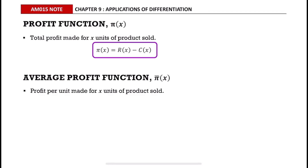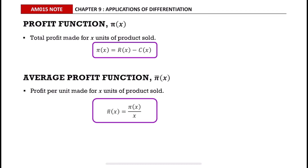The average profit function is denoted as π̄(x). It is the profit per unit made for x units of product sold. The average profit function is equal to the profit function divided by x.